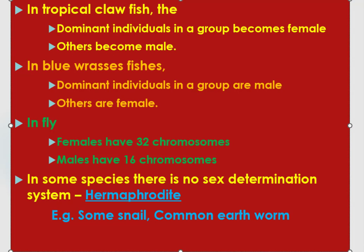In flies, females have 32 chromosomes and males have 16 chromosomes. In some species there is no sex determination system — what we call hermaphrodites. Some snails, for example, have both sexes. From the above data, we can conclude that the sex of organisms can be determined by type of chromosomes, number of chromosomes, temperature of the environment, domination of individuals within a group, and age.